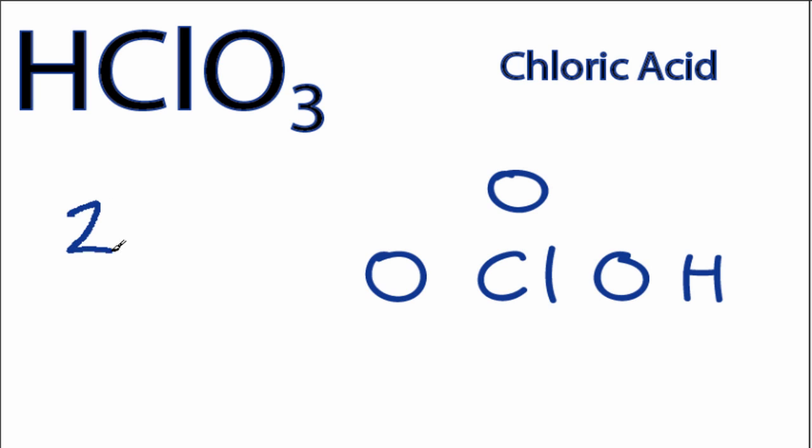For HClO3, we have a total of 26 valence electrons. We'll put two between atoms to form the chemical bonds, and then we'll go around the outside of the oxygens to fill the octets.